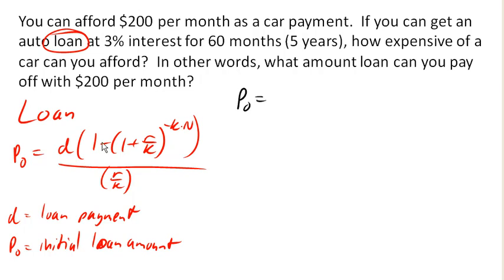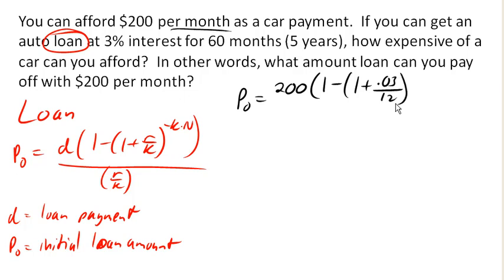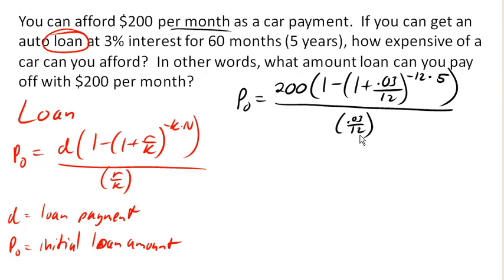What we do know is what we want the loan payments to be — we want the loan payments to be $200. We know the interest rate is 3%. We're talking about monthly payments, so K is going to be 12, 12 months in a year. And N is 5 years, so K times N is 12 times 5 — those 60 months. Divided by 0.03 over 12. This is the equation I need to evaluate in order to figure out what kind of loan I can afford.